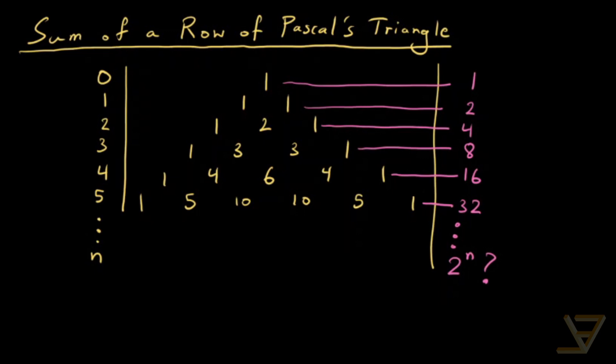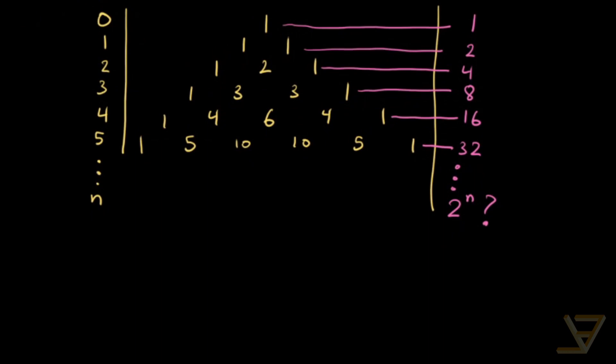So that's what we're going to try to prove. We're going to try to prove that row n has sum 2 to the power of n. Now there are a few ways of doing this. One is using Pascal's identity or Pascal's recursion.